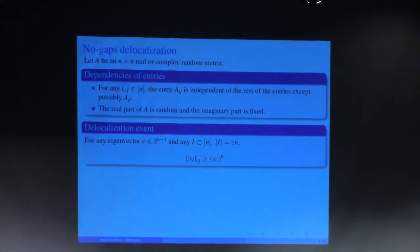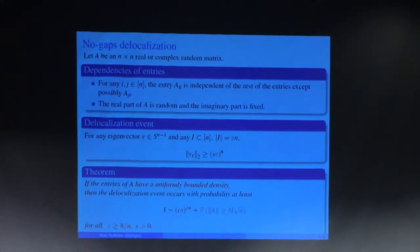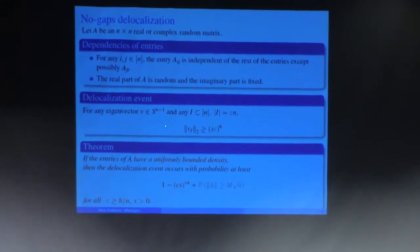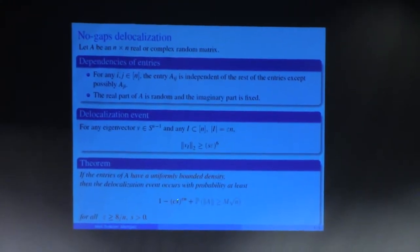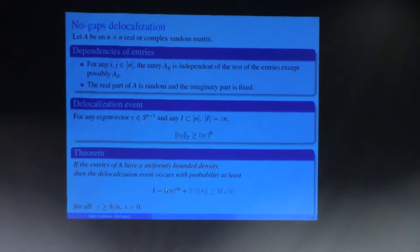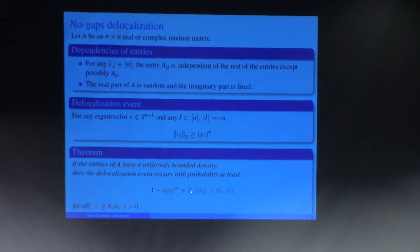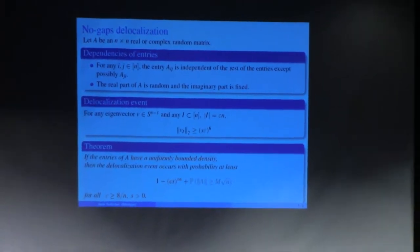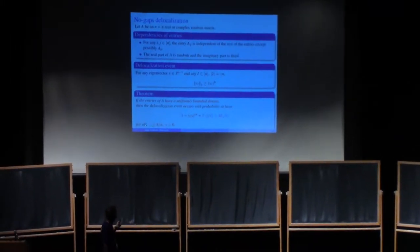We will prove that if the entries have a uniformly bounded density, then this delocalization event is likely — namely the probability of failure is exponential in epsilon*n, plus an additional term which is small if the entries have a bounded fourth moment. This can be established up to eight coordinates.